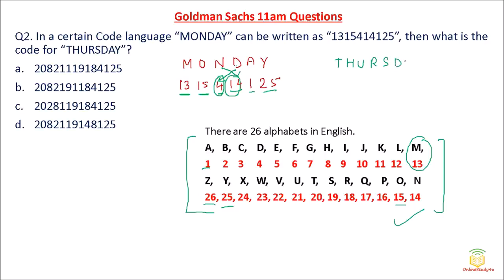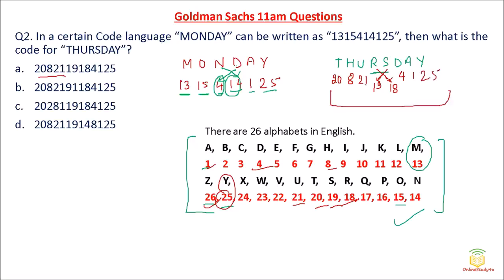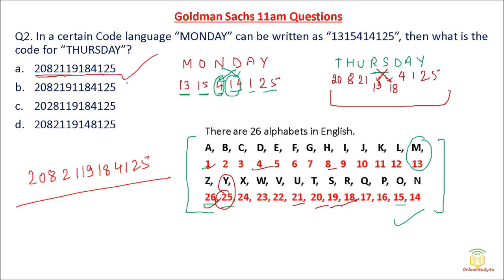Now they ask for the code of 'Thursday'. The middle letters must also be interchanged. T's code is 20, H's code is 8, U's code is 21. The middle pair R and S must be swapped: S's code is 19 and R's code is 18. Then D's code is 4, A's code is 1, and Y's code is 25. So the sequence is: 20, 8, 21, 19, 18, 4, 1, 25.